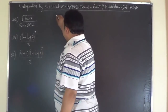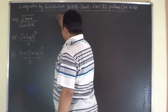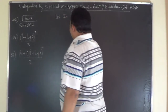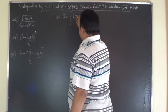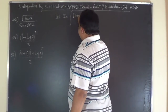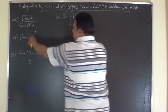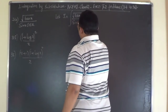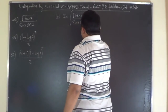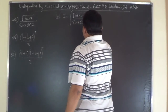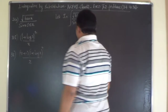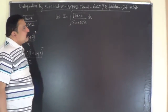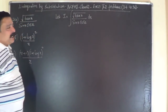For the 34th problem, let i be equal to the integral of root tan x divided by sin x into cos x dx. In this problem you have sin x and cos x in the denominator.